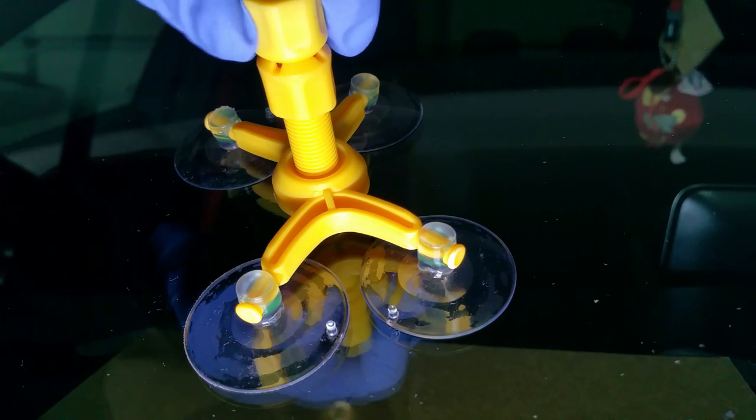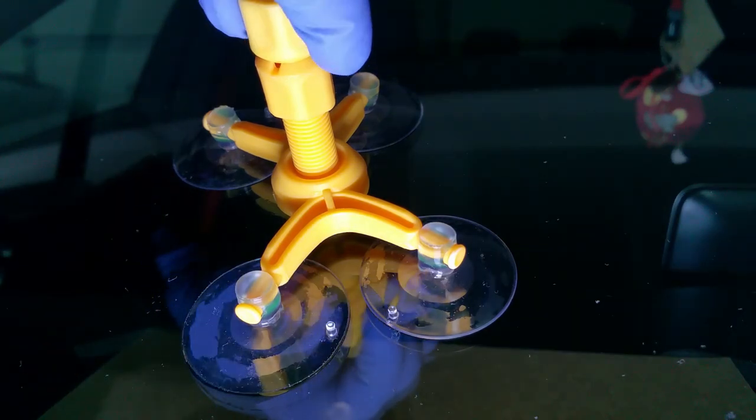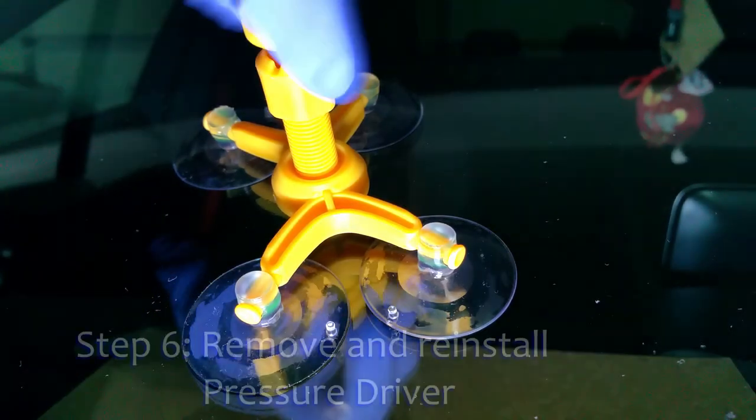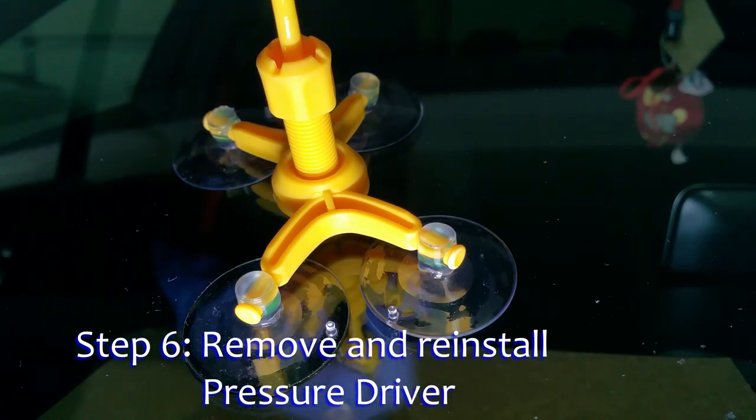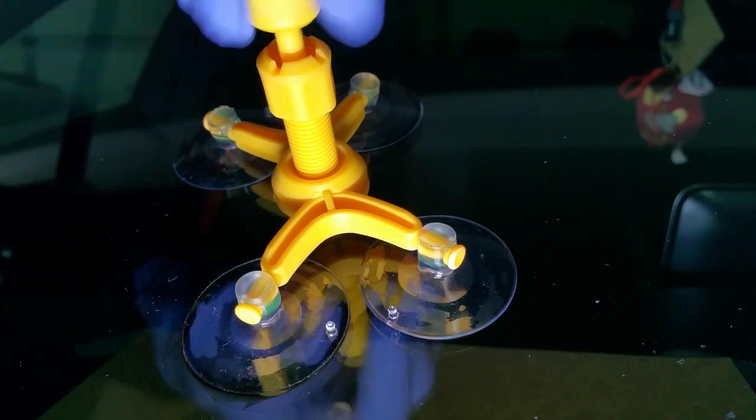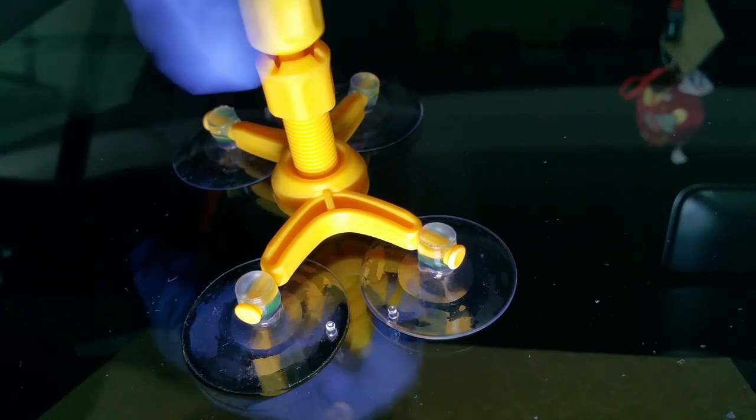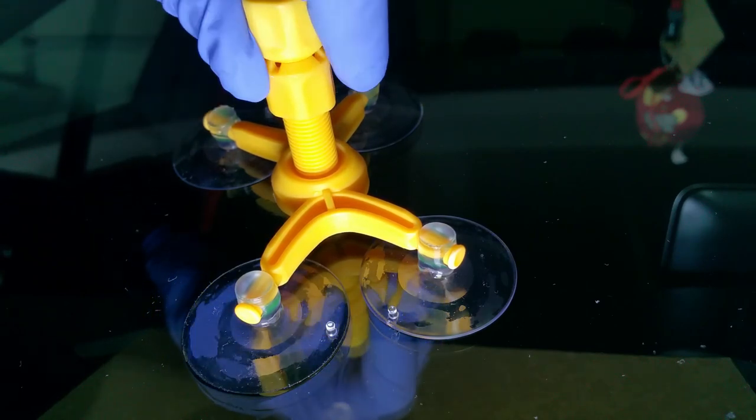After that, wait for about four to six minutes for the resin to fill the damaged area. Unscrew the pressure driver to let any trapped air out. Then reinstall the driver, tighten and make sure no air bubbles are in the damaged area. If there are, then steps four to six may need to be repeated.